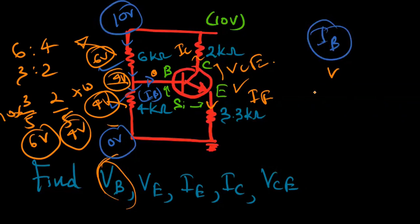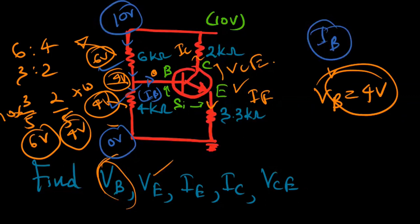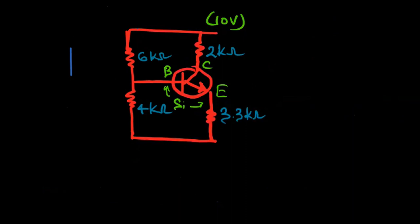Moving to VE, we found it has 4 volts here. Current will flow through this, so VB is greater than VE. Since this is a silicon diode, VBE we know is 0.7 volts.